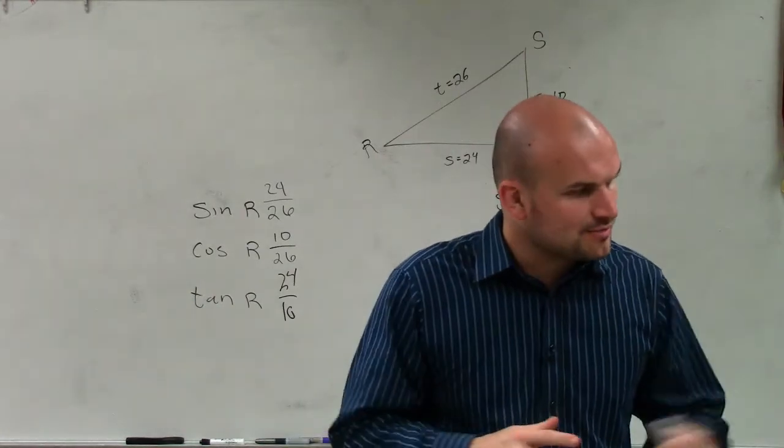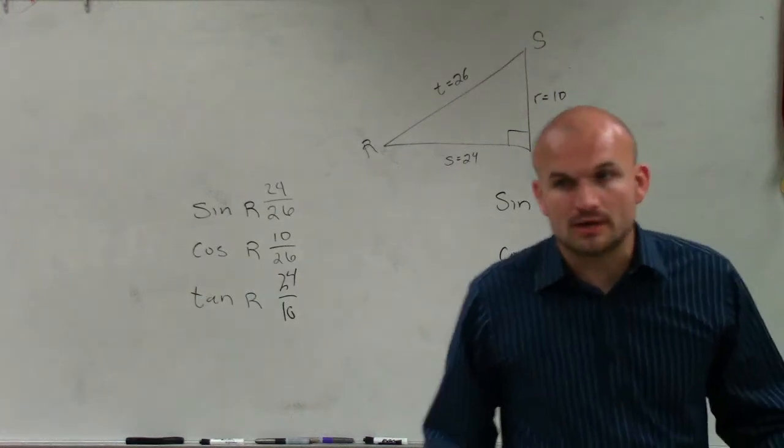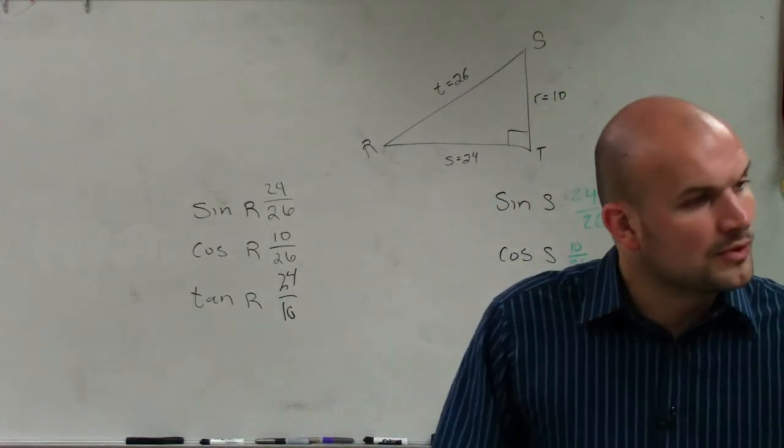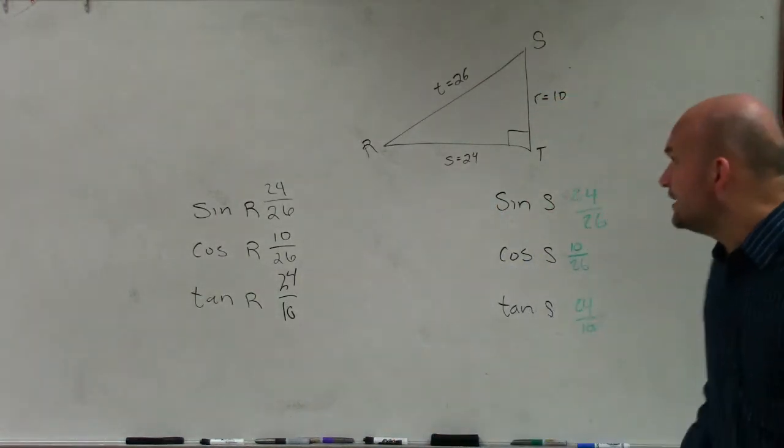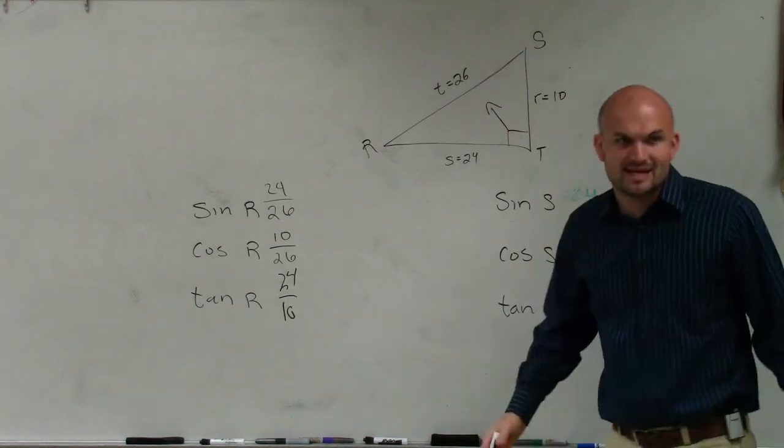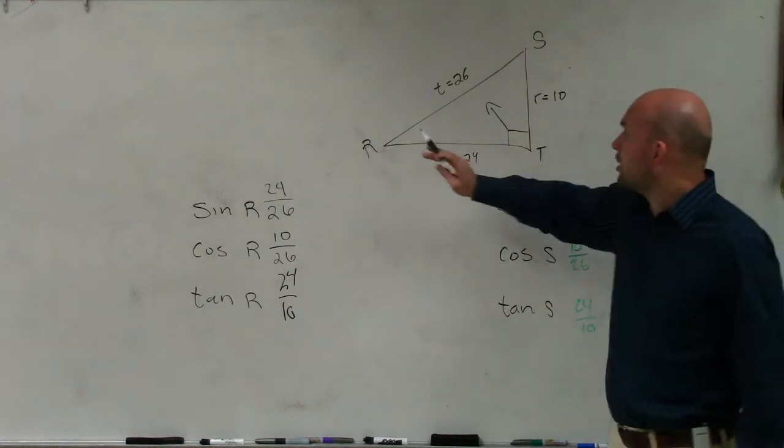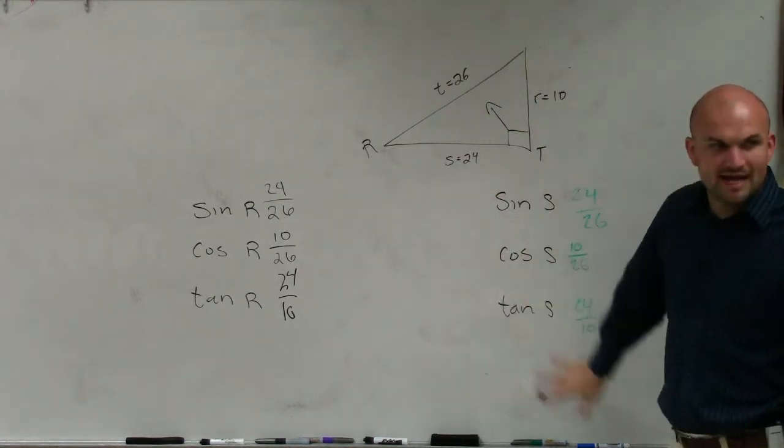When we're looking at a problem like this, what we want to do is look at what is the opposite and the adjacent side from r, OK Taylor? And when we're looking at the opposite adjacent side, remember, the hypotenuse is the easiest one, 26, right? So I should see 26 on the bottom of these two. Perfect. Now let's look at r. Forget about s for a second. We'll do the s's next.